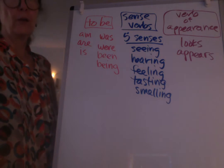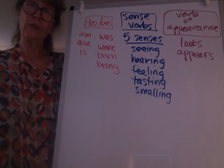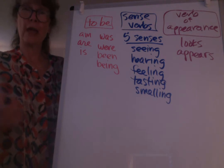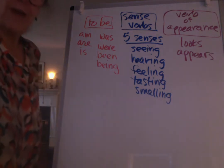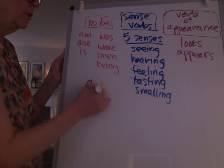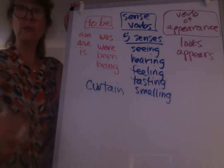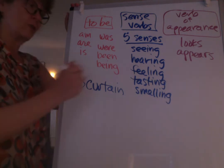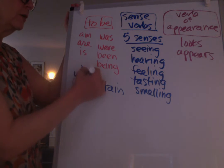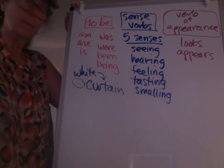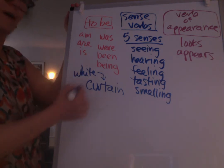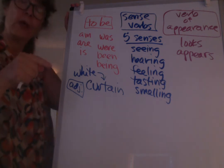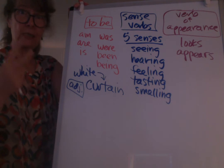Let's think first — look at your handout. The first thing we want to remember about adjectives: adjectives describe, or we say they modify. That means they describe, change, or add information to nouns. So if I have a noun — a curtain — curtain is a thing, a person, place, or thing. If I have a word that tells me something about the curtain, like 'the white curtain,' white tells me about curtain. So white is an adjective — it's modifying the noun, giving us more information about the curtain.